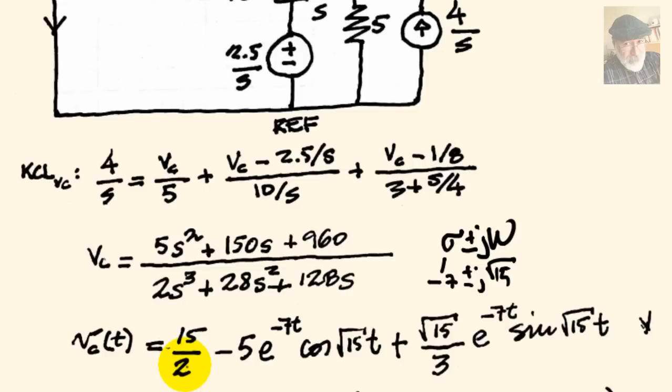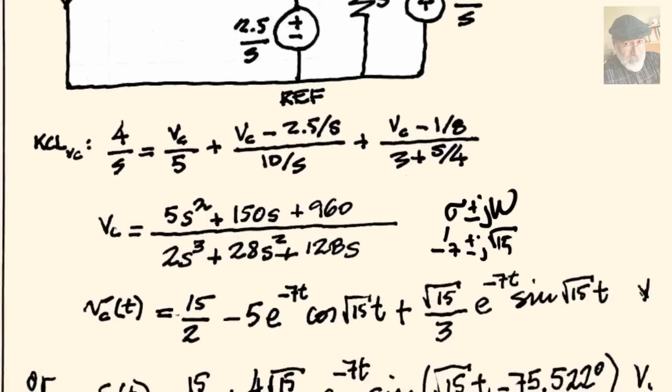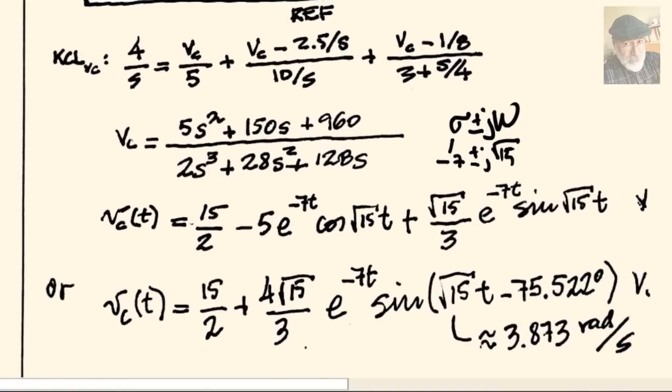Or, I would rather you had written that the engineer's way, the way it appears on an oscilloscope, as one decaying oscillation, like so. Final value, 15 over 2, and then an initial amplitude multiplied by a decaying sinusoid. The same e to the negative 7t multiplied by sine omega t, with this phase shift, negative 75 and a half degrees. All of those are valid. And that is the answer to question number one, of the second midterm of ELEC 202.